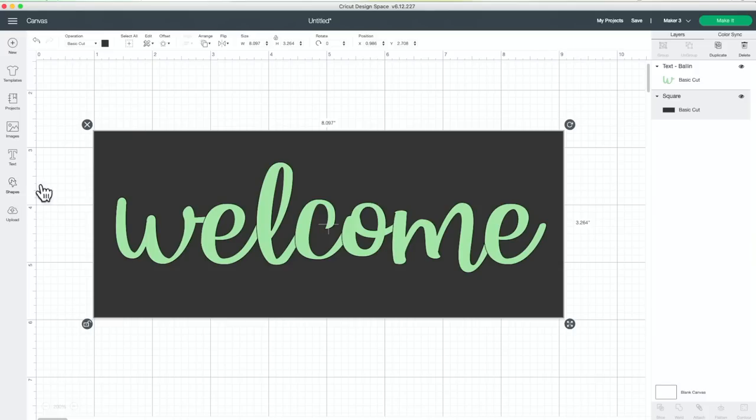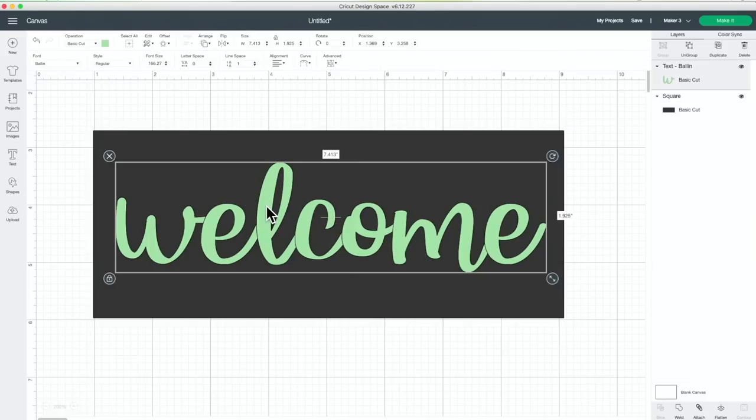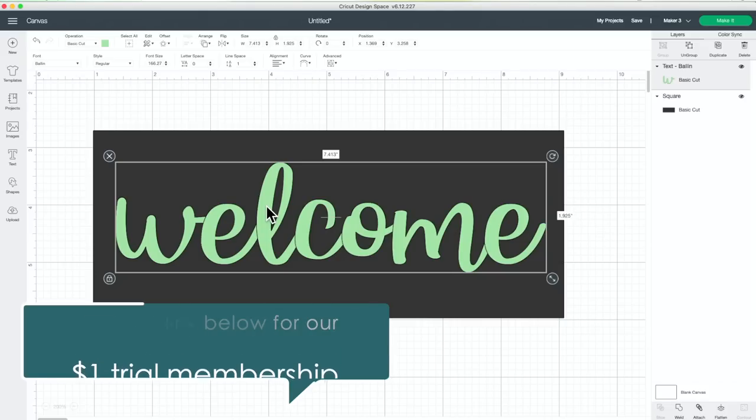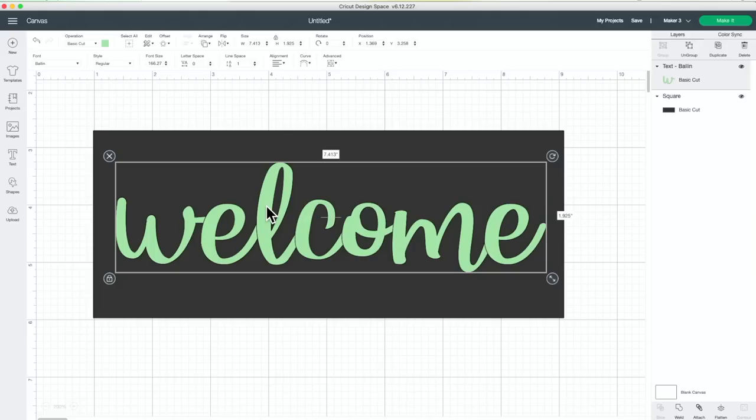And then I inserted a Makers Gonna Learn font. This is an awesome script font that is available to all monthly and yearly members, and if you grab that dollar trial membership down below, you can download this font as one of the 20 cut files allotted for you in that trial membership.